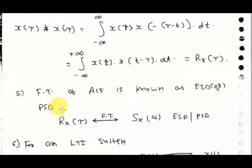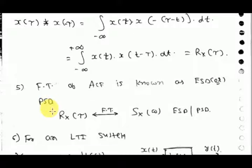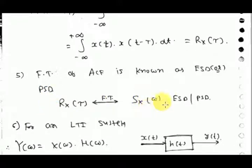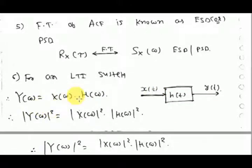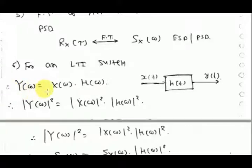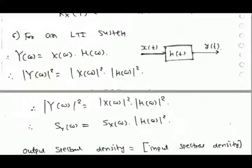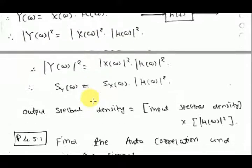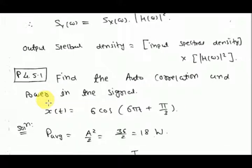A very important property: the Fourier transform of the ACF is known as the energy spectral density or power spectral density, depending on whether the signal is an energy or power signal. So the Fourier transform of Rx(tau) gives the spectral density. For an LTI system, Y(omega) equals X(omega) times H(omega). Taking the square of the magnitude on both sides: the mod squared of Y(omega) is the output spectral density, and mod squared of X(omega) is the input spectral density. So the output spectral density equals the input spectral density multiplied by mod of H(omega) squared. This is a very important result.